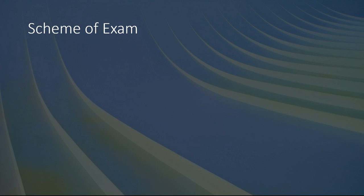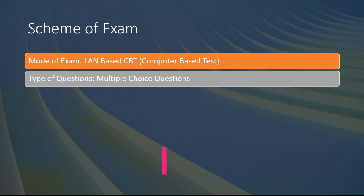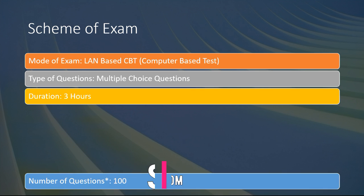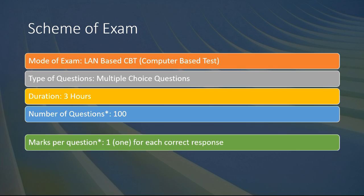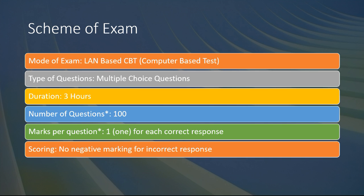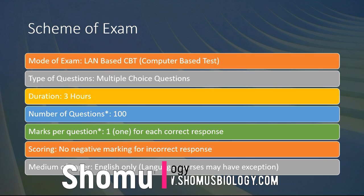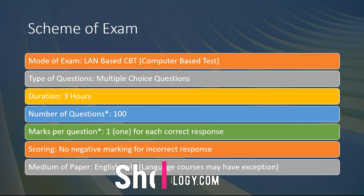The scheme of the exam is really important. The mode of the exam is LAN-based, that is CBT — computer-based exam. The type of questions will be multiple choice questions. Duration will be three hours. Number of questions is approximately 100, and marks per question is one for each correct answer — so 100 marks total. There is no negative marking for incorrect responses, and the paper will be in English only. However, if you choose a language course such as Hindi, Marathi, Gujarati, or any other language, the question paper will be in that language. Apart from that, in general the paper will be in English. That is the overall summary of JNU entrance examination.